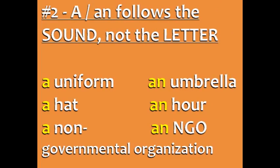Number two: whether you use a or an follows the sound, not the letter of the next word. For example, we say 'a uniform' because uniform starts with a 'yuh' sound, but 'an umbrella' because umbrella starts with an 'uh' sound — a vowel sound.